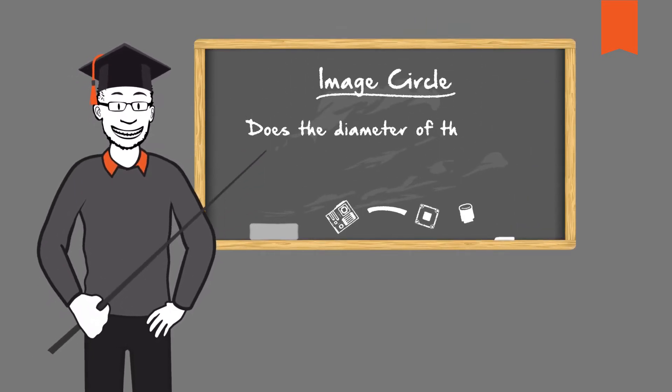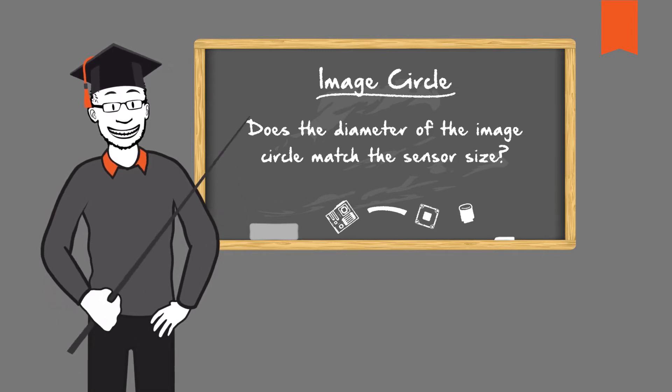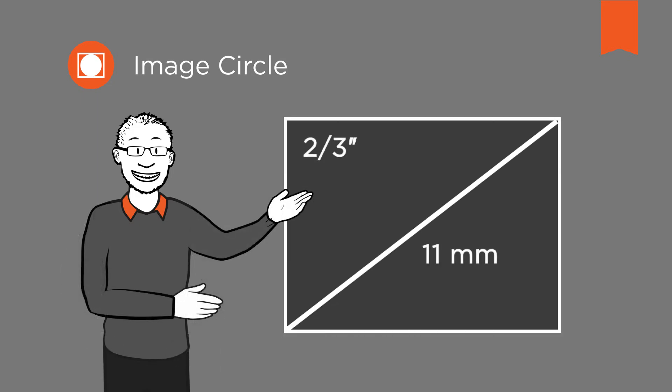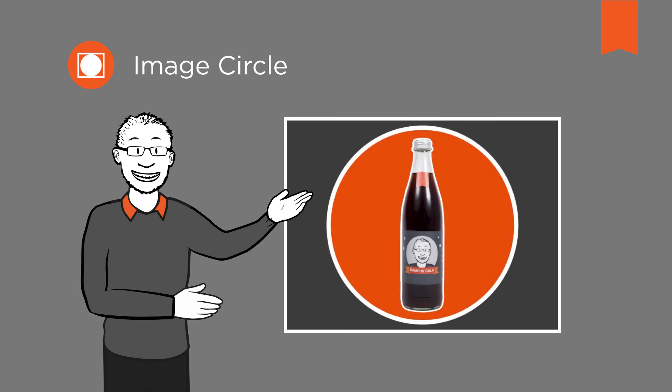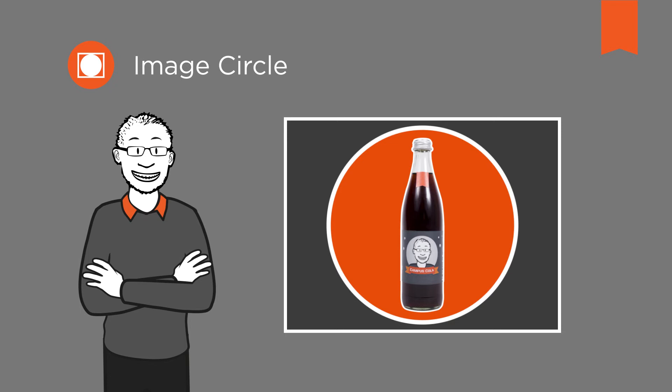Does the diameter of the image circle match the sensor size? The required image circle is determined by the size or diagonal of the sensor. A lens selected to match the sensor size ensures that the scene to be captured is optimally imaged on the sensor surface. If the image circle for the lens and the sensor is the same, it minimizes unwanted distortions and ensures homogeneous illumination from the center of the image up to the edge. For a two-third sensor, a two-third lens should be used. Since the maximum image circle is limited by the sensor size, larger and thus usually more expensive lenses do not add any value, as long as the image quality of the lens is consistently high all the way to the edge.